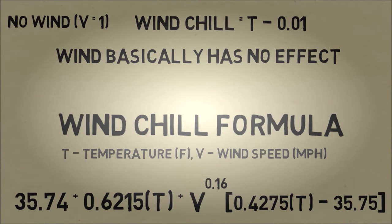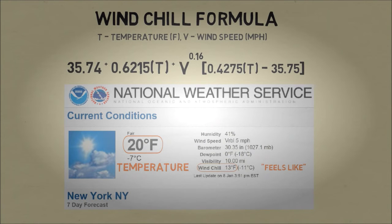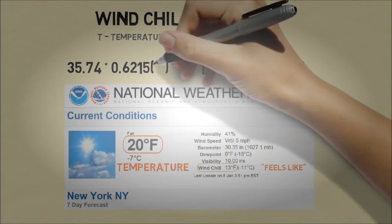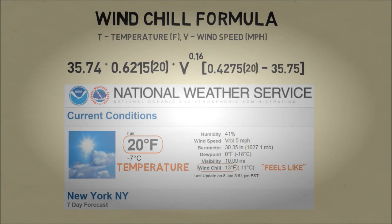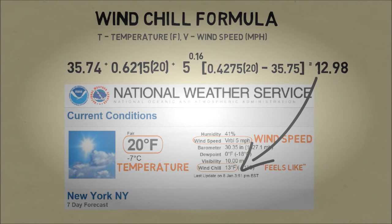However, when there is a lot of wind, the V to the power of 0.16 term is going to have an effect. Let's look at what happens when the temperature is 20 — we'll substitute T equals 20. And we'll look at the wind speed variable: here we have a wind speed of 5 miles per hour, so we set V equal to 5. When we evaluate the expression, we get 12.98. So we calculated the wind chill was 12.98, which pretty much exactly matches the wind chill of 13 degrees.